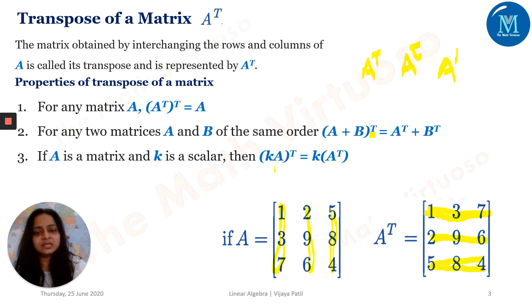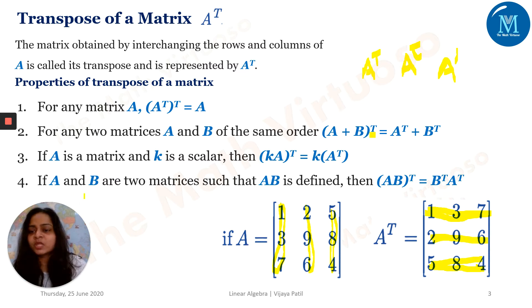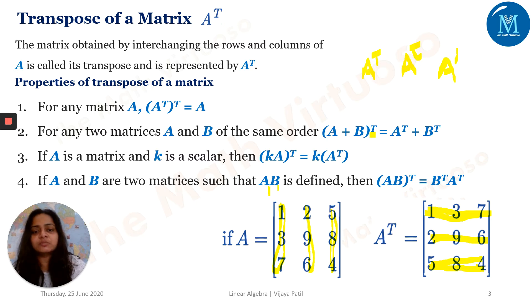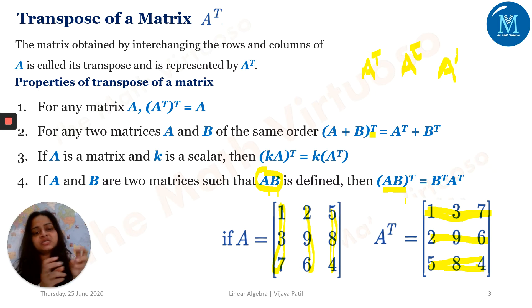If capital A is a matrix and K is a scalar, then (KA)^T equals K into A transpose. These are very simple properties — you can just take random matrices A and B and verify each property. Now, if A and B are two matrices and the product AB is defined, then taking the transpose of that product gives B transpose A transpose. This is known as the reversal law — whenever I take (AB) transpose, I get B transpose first, then A transpose.